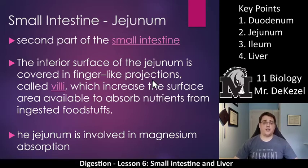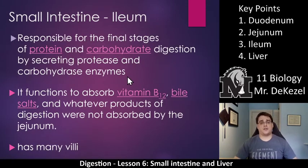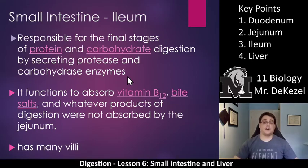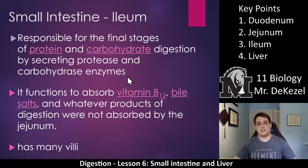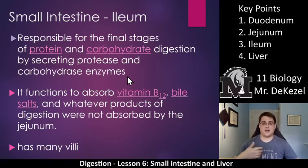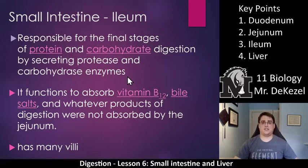The third part of the small intestine is the ileum. It is responsible for the final stages of protein and carbohydrate digestion, secreting protease and carbohydrate enzymes. It functions to absorb vitamin B, and any bile salts that have been released are reabsorbed here since they are very valuable and need to be reused. It also has many villi and cleans up whatever products of digestion were not absorbed by the jejunum. In summary, breakdown happens mainly in the duodenum, while absorption happens in the jejunum and ileum.